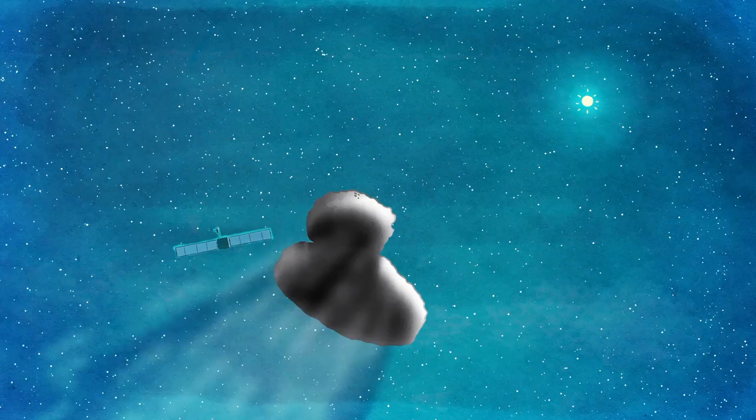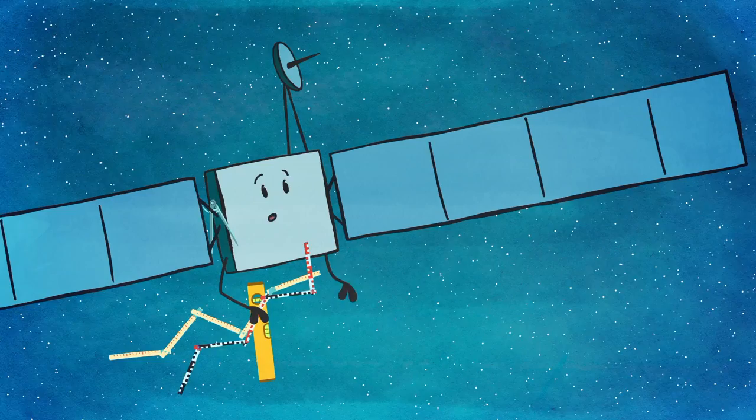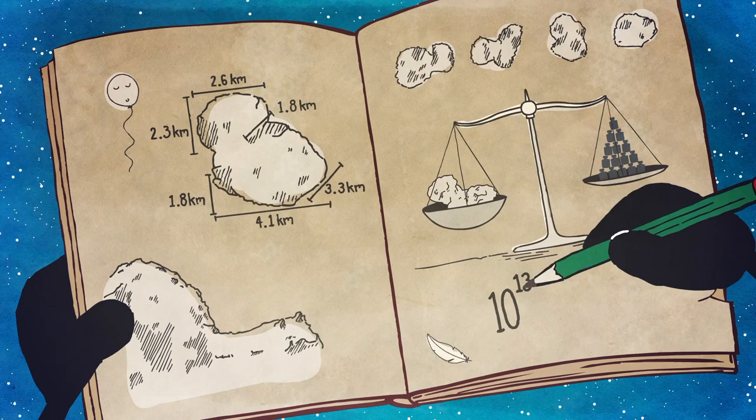Meanwhile, Rosetta continued studying the comet, learning new and wonderful things as she followed it on its journey through the solar system. It measured four kilometers across, and from the gravitational pull that Rosetta felt, she could calculate the mass of the comet—10 billion tons.